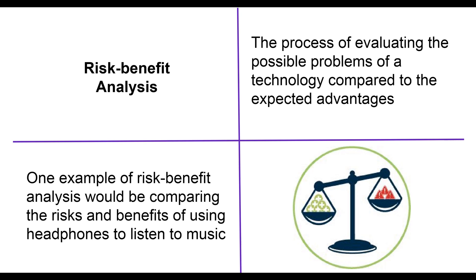You can go through and list a bunch of these things. A risk of headphones could be that it might damage your hearing if you're listening at too loud a volume. A benefit is that it's private — you don't have to share your noise with everyone else. I have a scale graphic here with warning symbols for risks and pluses for benefits. The key question is: do the risks outweigh the benefits, or do the benefits outweigh the risks? If the benefits outweigh the risks, there are more good things than negative things, and that's typically a good outcome.